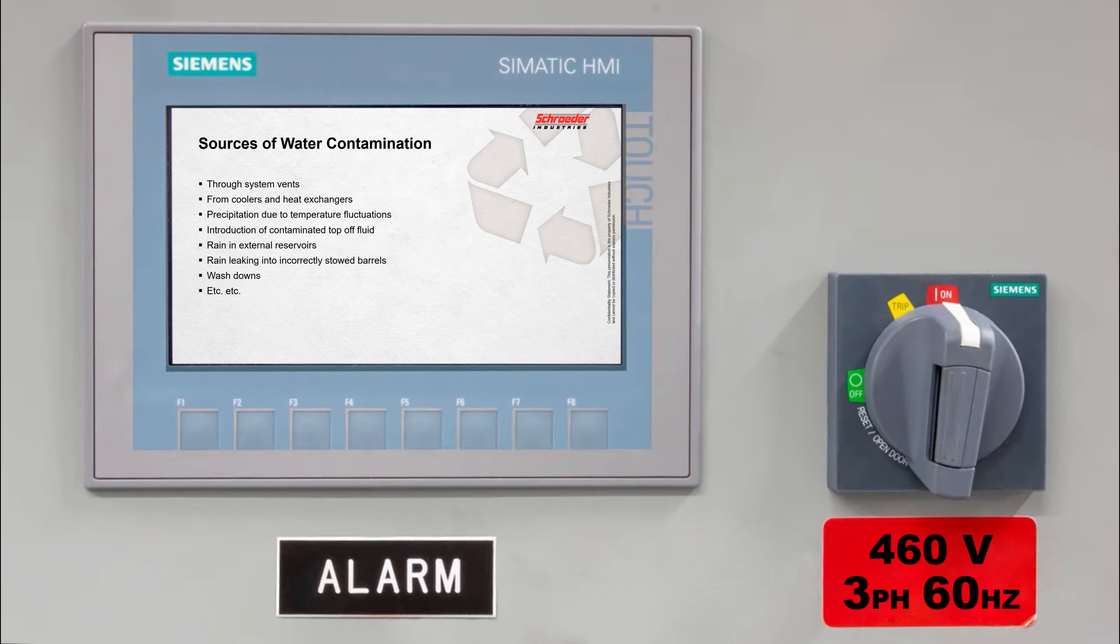But what we also want to do when we sell these units is really find out where is the source of their contamination coming from. Do they not have sealed vents on the tank? Are they not using desiccant breathers? We get a lot of water coming in from coolers and heat exchangers. A lot of times the customer will be running this unit to keep their system operational until they can replace their coolers.